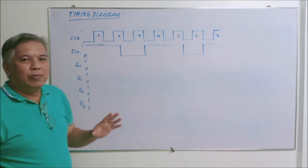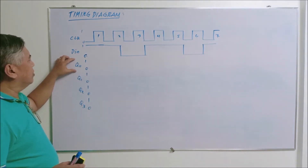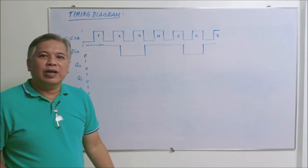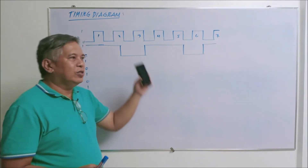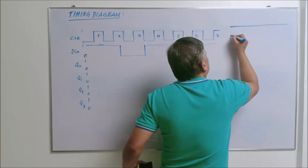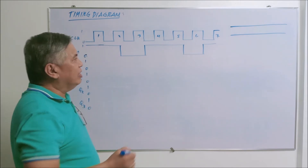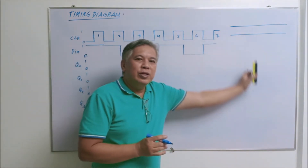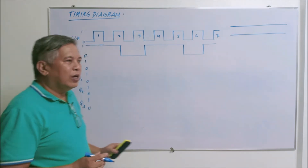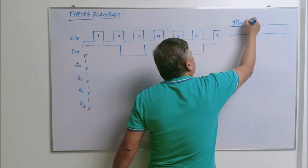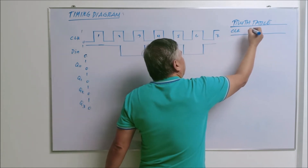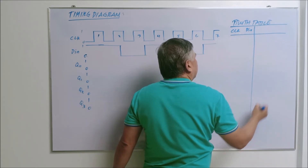If we use the same technique from the previous discussion — determining the initial Q or D before each positive triggering to find Q sub zero, Q sub one, Q sub two, and Q sub three — it would be very difficult because we would have to draw D sub zero before Q sub zero, D sub one, and so on. Instead, what we will do is make a table from this timing diagram. This is the shortest method, which I have been teaching for many years.